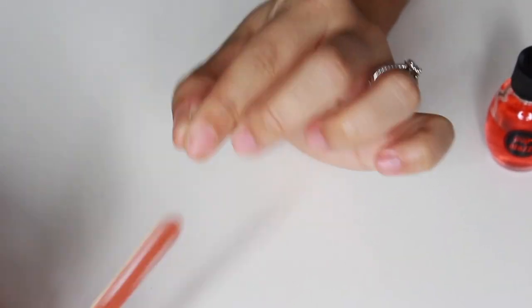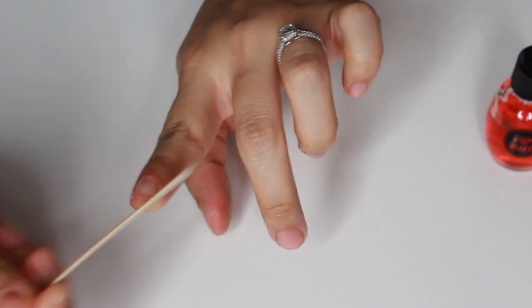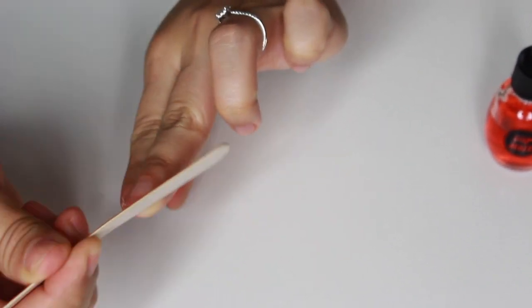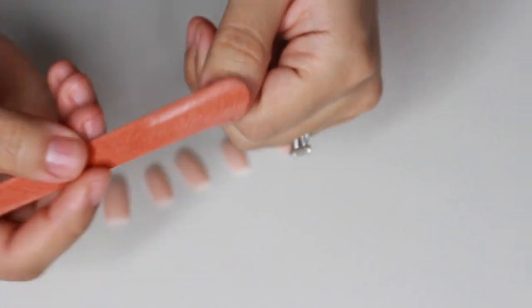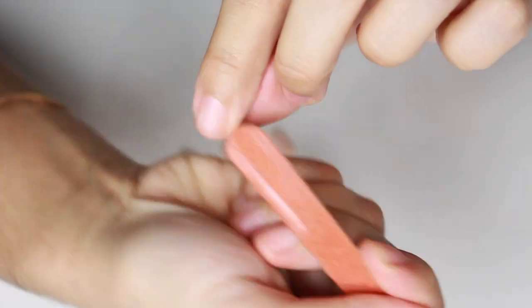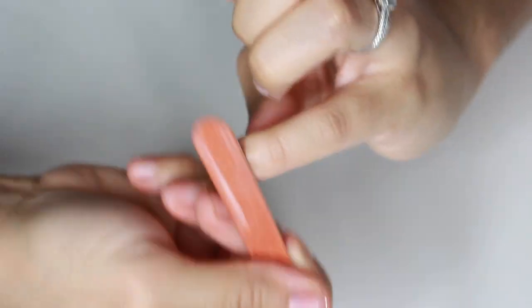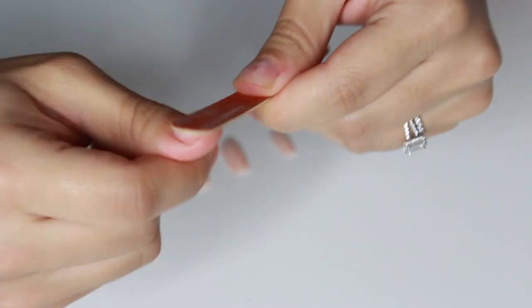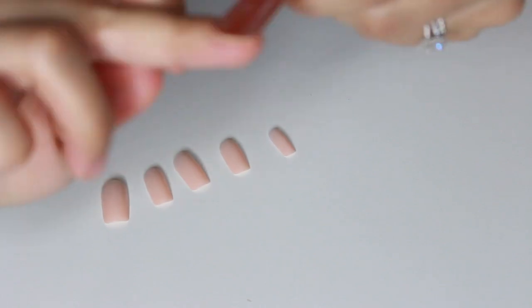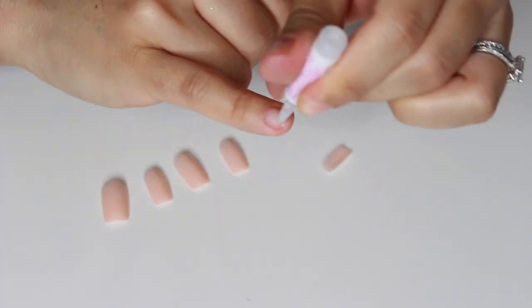I'm going to file the very tips of my nails, the very edges, so that they're not popping out of the sides. I'm just moving them inward. Then I'm buffing with the other side of the file so that it's a little bit more textured and the nail will glue much better.